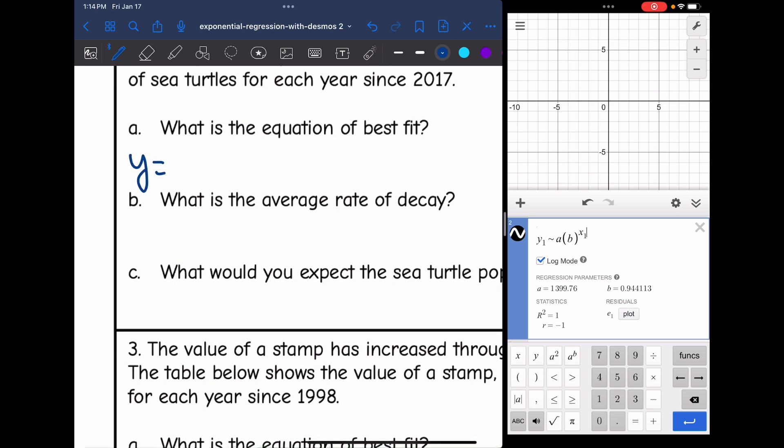And the next question is asking for my average rate of decay. That has to do with the B value. Since it's less than 1, I'm decaying. To figure out how much I'm decaying by, I'm going to do 1 minus 0.94, which is 0.06. So that means I have a 6% average rate of decay.